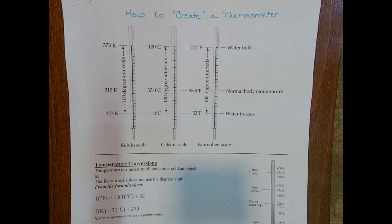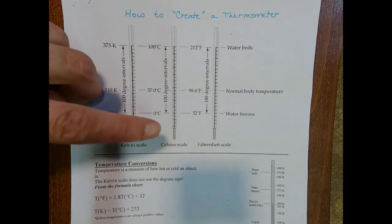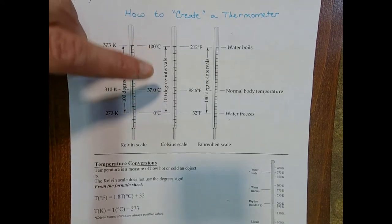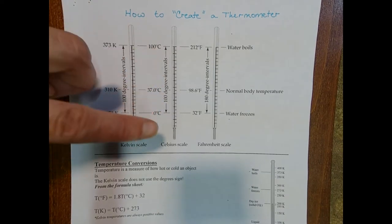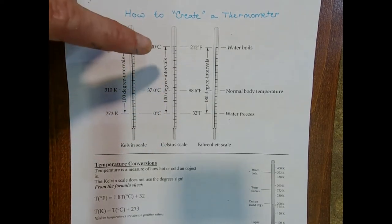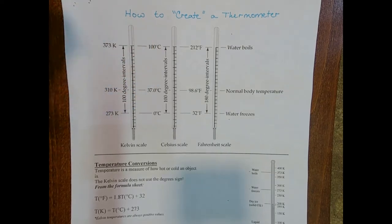So a thermometer is a cylinder with some kind of liquid in it. As the temperature of the liquid increases, the molecules start moving faster and the volume of the liquid also increases. So at that point, the liquid inside the thermometer takes up more space and then it looks like the liquid is moving up because it's increasing in volume.